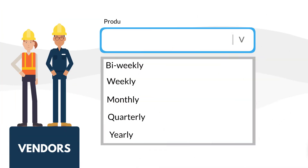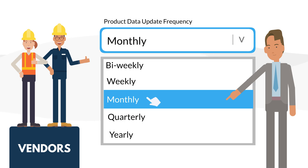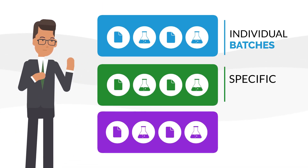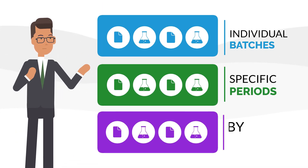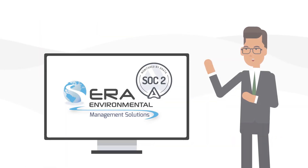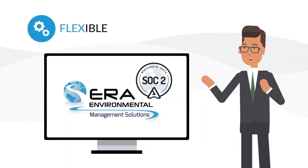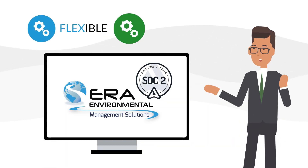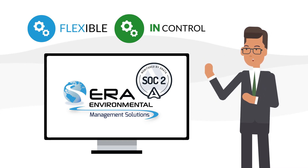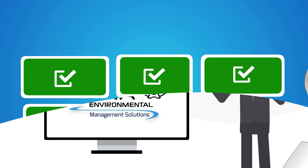Vendors can adjust product data update frequency as needed to accommodate customer requirements. Send product data for individual batches, specific periods, or by invoice. ERA's Vendor Module is flexible and leaves vendors in control while letting them provide exactly what their customers need.